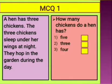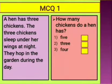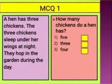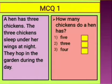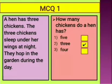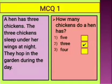A hen has three chickens. The three chickens sleep under her wings at night. They hop in the garden during the day. The question is: how many chickens does a hen have — five, three, or four? We read in the first line that a hen has three chickens. So the answer is three, and you should put a tick in front of three.